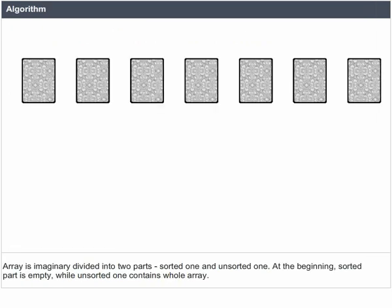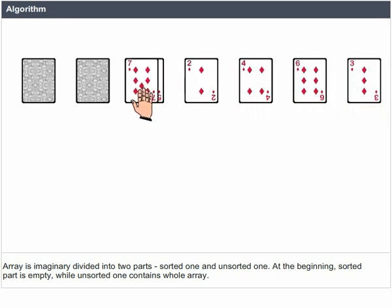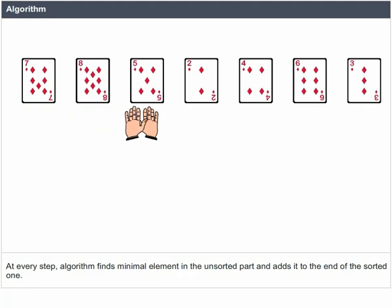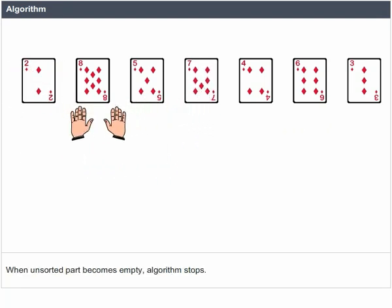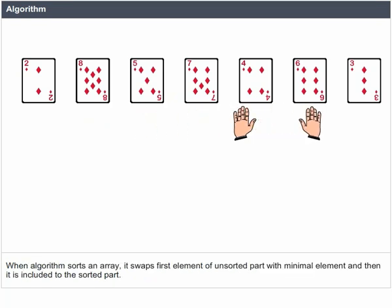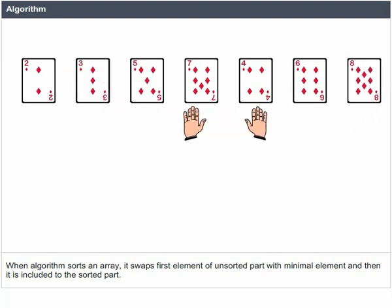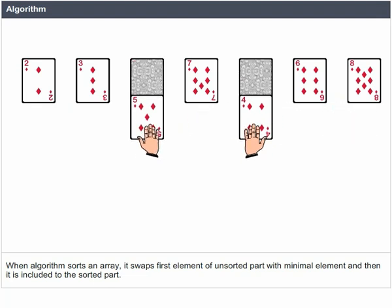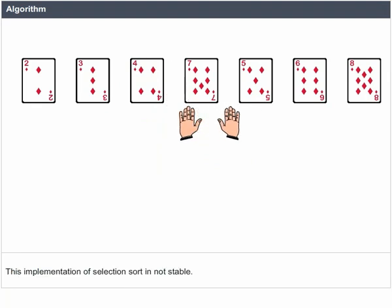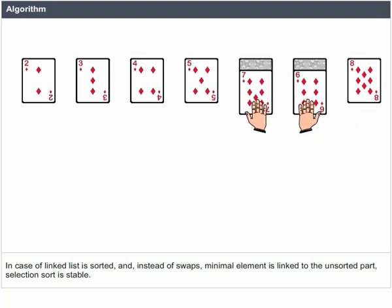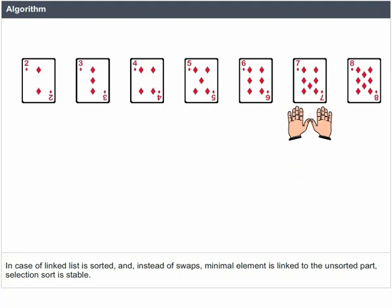The array is imaginary divided into two parts: a sorted one and an unsorted one. At the beginning, the sorted part is empty while the unsorted one contains the whole array. At every step, the algorithm finds the minimal element in the unsorted part and adds it to the end of the sorted one. When the unsorted part becomes empty, the algorithm stops. When the algorithm sorts an array, it swaps the first element of the unsorted part with the minimal element and then includes it in the sorted part. In case of a linked list, instead of swaps, the minimal element is linked to the unsorted part, making selection sort stable.